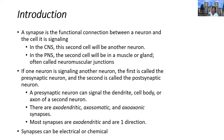That can form an axodendritic synapse if it's the axon synapsing onto the dendrites of another neuron. The dendrites are the projections on the soma, the cell body, that are receiving signals and have ligand-gated channels responsible for graded potentials. Axodendritic is axon terminal to dendrites. Axosomatic is axon terminal to soma or cell body. And axoaxonic is axon terminal to the axon.